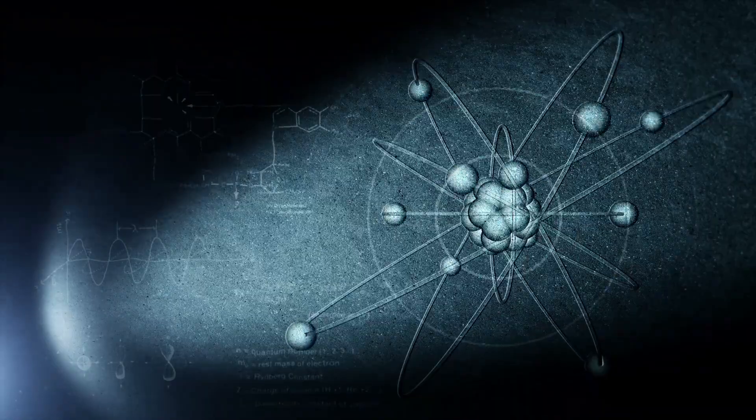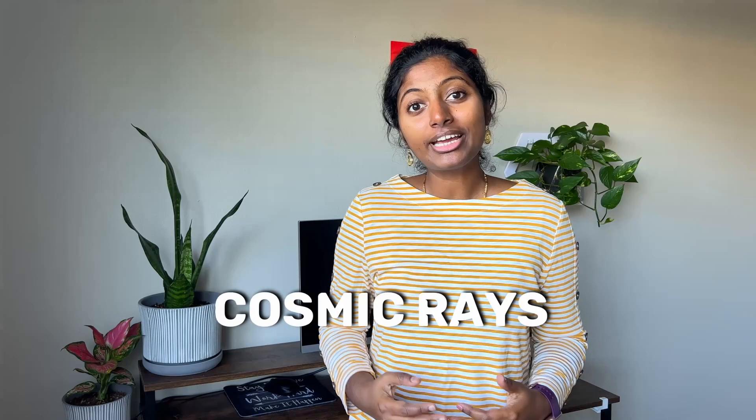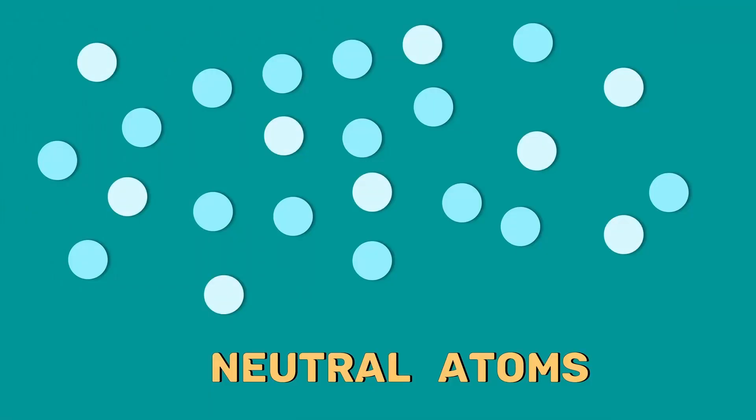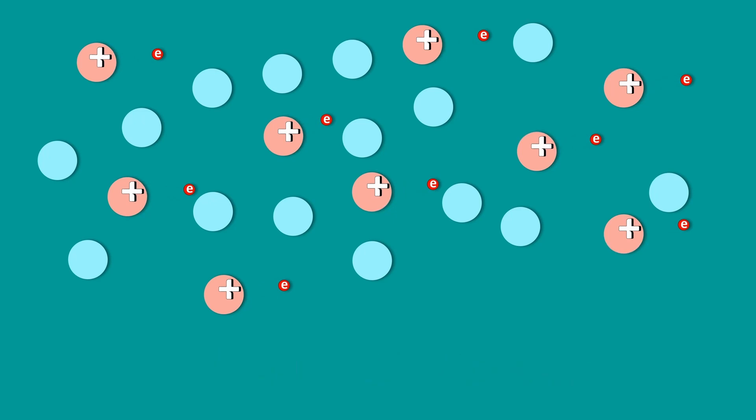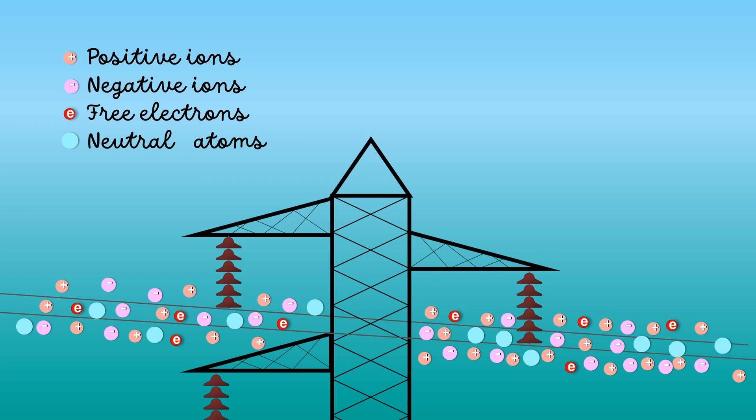We know that these gases are made up of tiny particles called atoms. When an atom loses an electron, it becomes a positive ion and becomes a negative ion when it gains an electron. Due to cosmic rays, ultraviolet radiation and radioactivity, some atoms in the air lose electrons and some gain electrons. Therefore, under normal condition, the air around the conductor has some charged particles. In other words, it contains ions and free electrons.